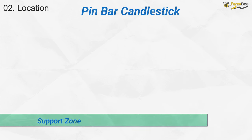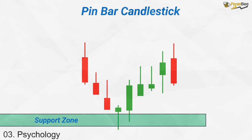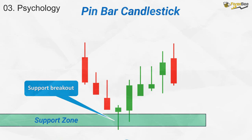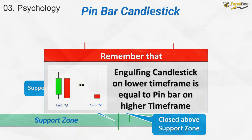A pin bar often forms at key levels like support and resistance. Here, we see a bullish pin bar forming at a support zone. To understand its psychology, focus on the candle's close. It breaks below the support but closes above, showing strong buying pressure and signalling a potential trend reversal from bearish to bullish. An engulfing candle on a lower time frame often means a pin bar is forming on a higher time frame.